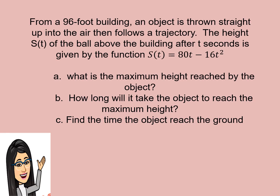Now let us have this motion-related problem. From a 96-foot building, an object is thrown straight up into the air and follows a trajectory. The height S(T) of the ball above the building after T seconds is given by the function S(T) is equal to 80T minus 16T squared. The first question is: what is the maximum height reached by the object? The second question: how long will it take the object to reach the maximum height? And last: find the time the object reaches the ground.